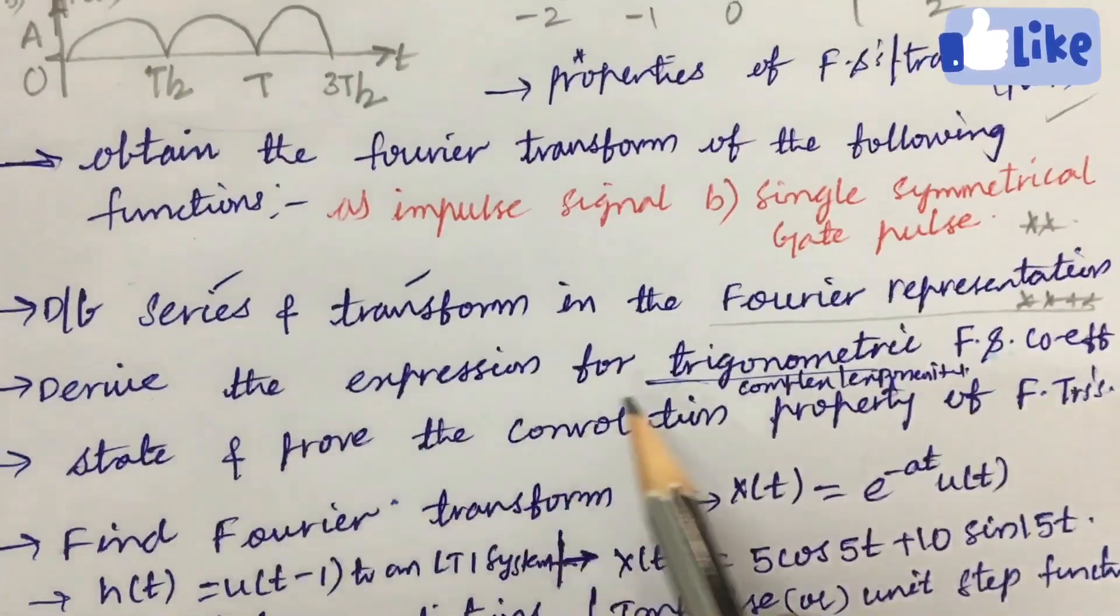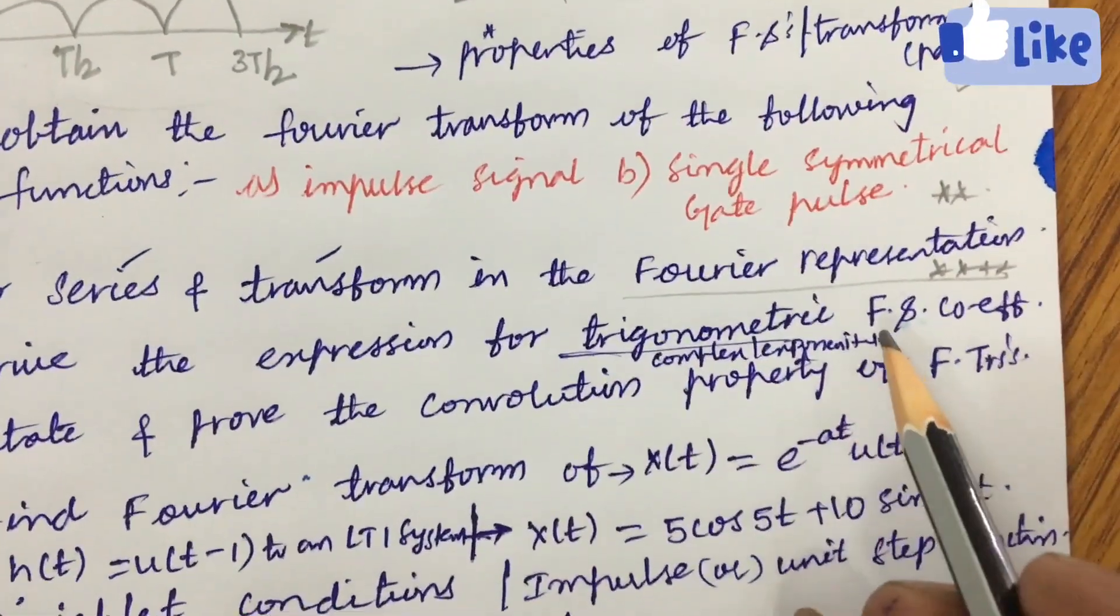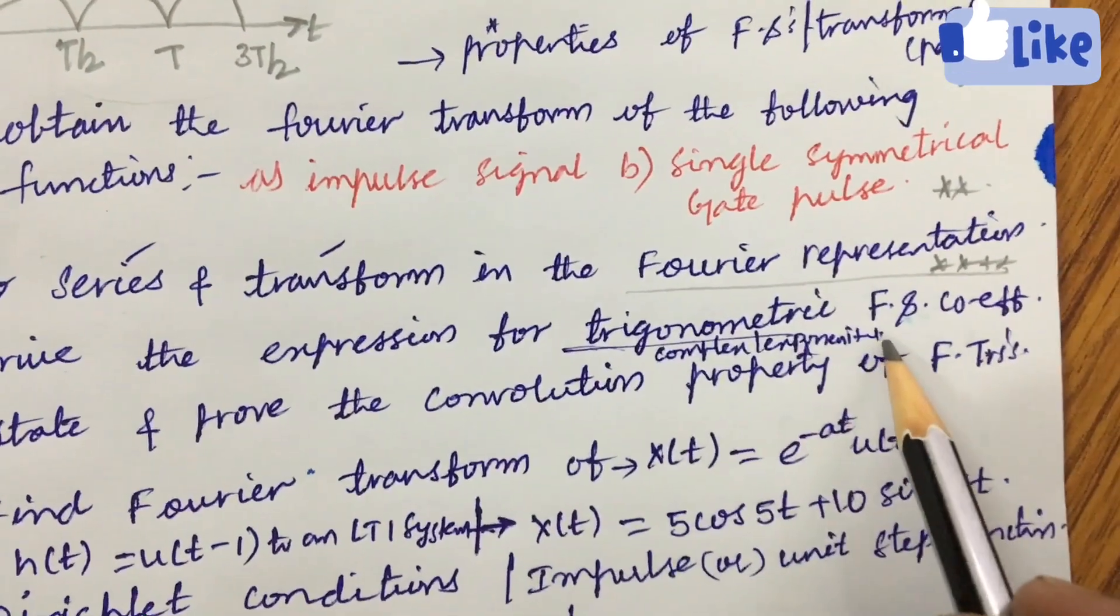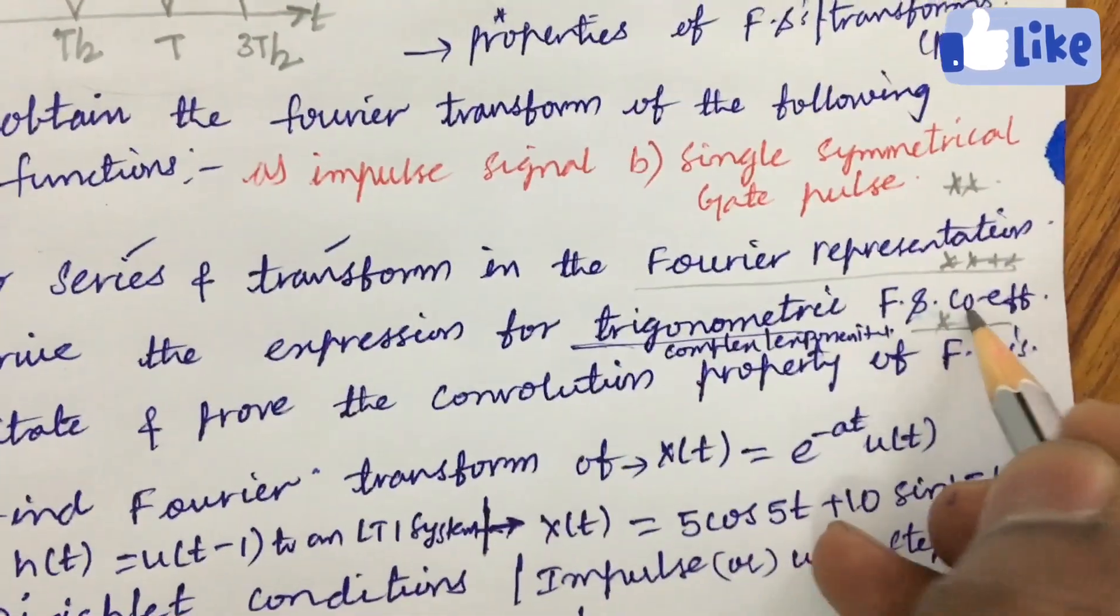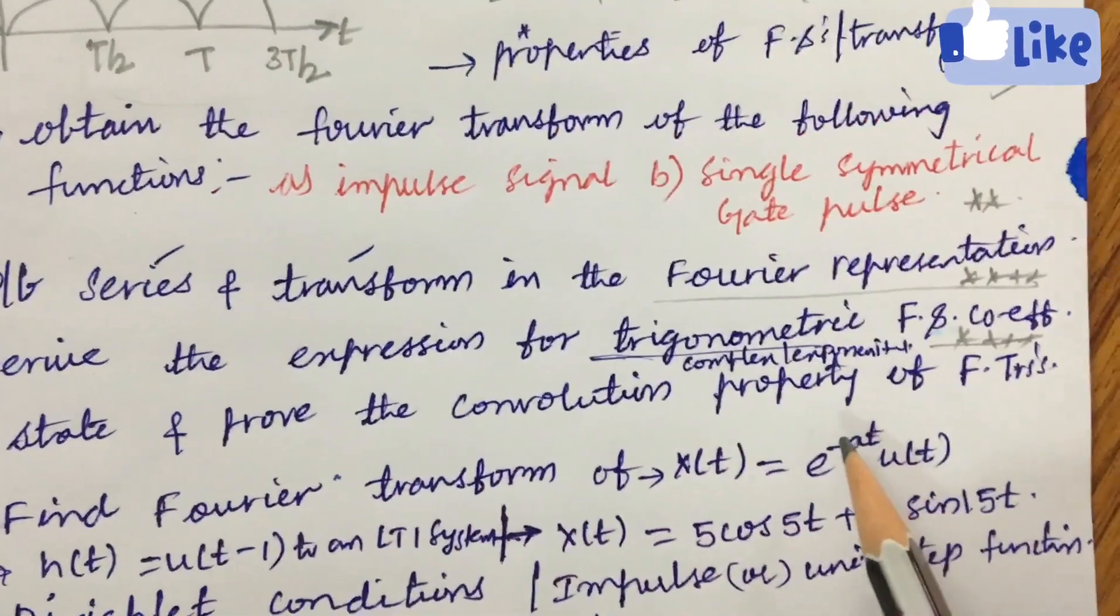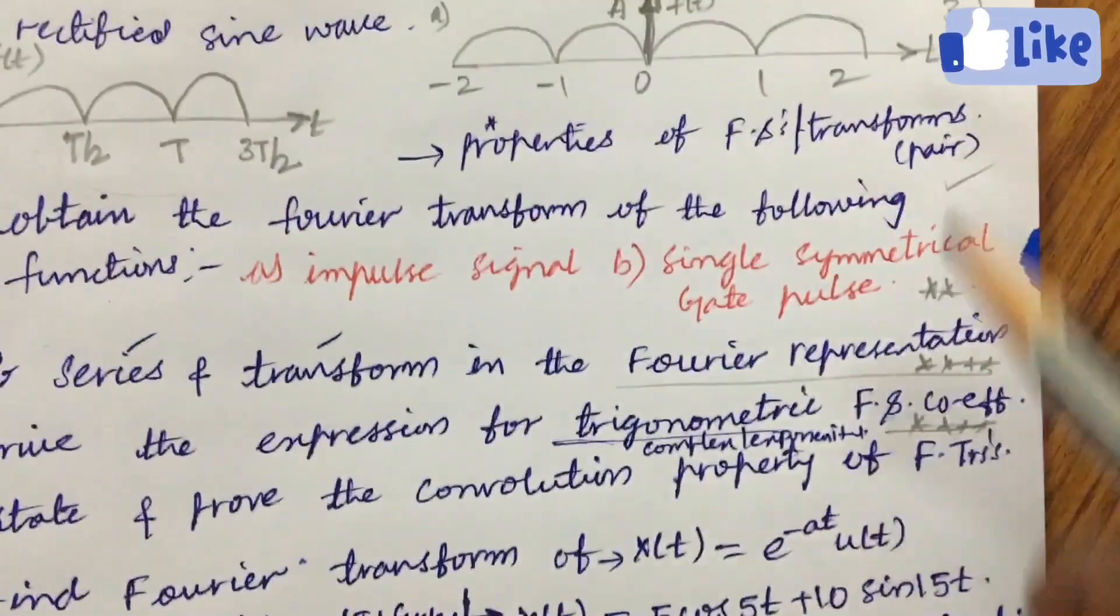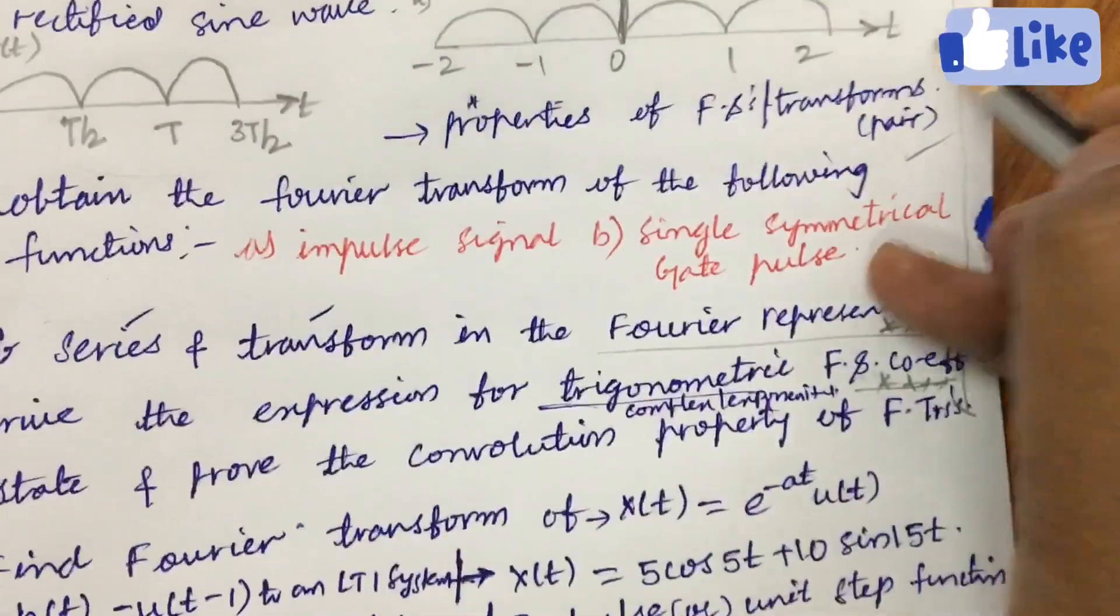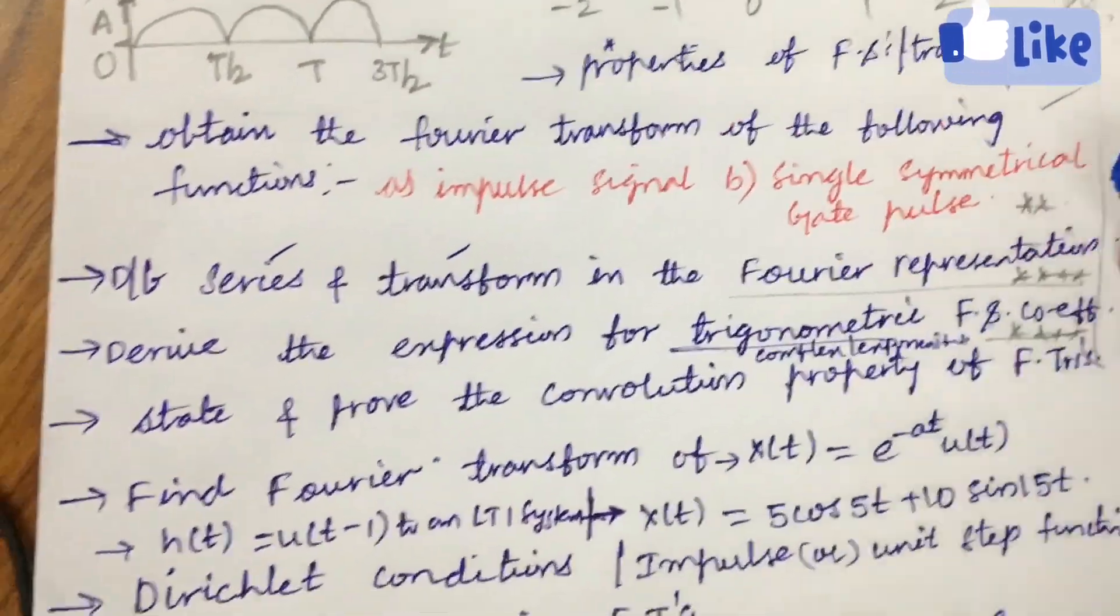Derive the expression for trigonometric as well as complex or exponential Fourier series combination coefficient is also one of the very very important question state and prove the convolution property of Fourier transformation till here you are going to get 3a as well as 3b question dear student.